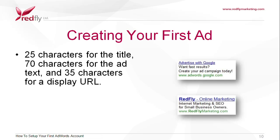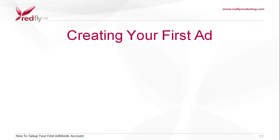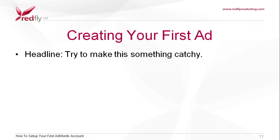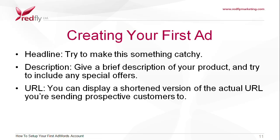Text ads can contain, including spaces: 25 characters for the title, 70 characters for the ad text, and 35 characters for a display URL. This is displayed on four lines: a headline, two lines of descriptive ad text, and a URL line. Your headline should be something catchy. The description should be a brief description of your product and could include any special offers. You can display a shortened version of the actual URL you're sending prospective customers to.